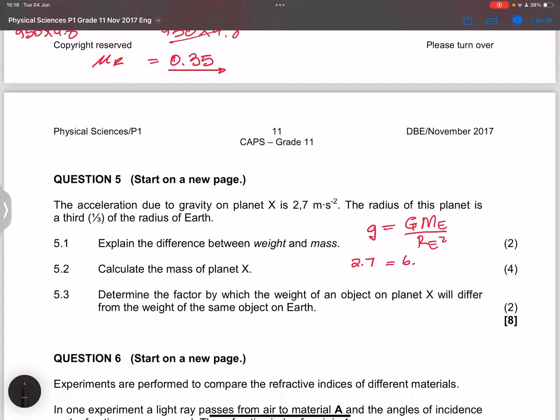So which means this is going to be 6.67 times 10 to the minus 11 multiplied by the mass of planet X. So let's say mass of X. And we know that the radius is a third of the radius of the Earth.